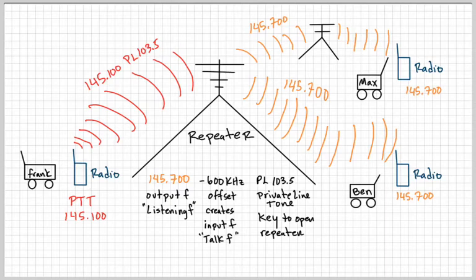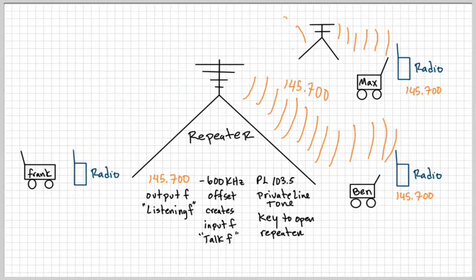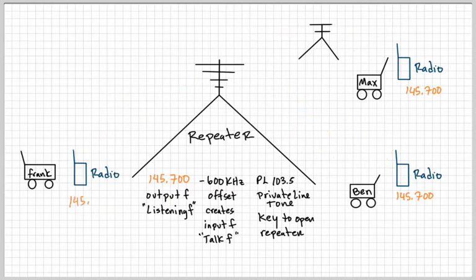Pressing the PTT button and having a one-way conversation can last a few minutes. Depending on the repeater, it might let you speak more than five minutes but less than ten minutes. The more you utilize the repeater, the more you'll know how long you can speak. When Frank lets go of the PTT button, everybody will get back to listening.